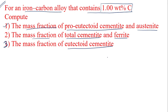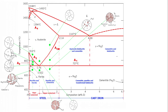Before solving, let me discuss something about these questions from the iron-carbon diagram. This is our Fe-Fe3C diagram. In this diagram, one important point corresponds to a carbon percentage of 0.76, and this point is called the eutectoid point.